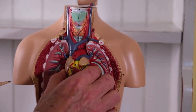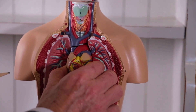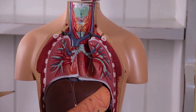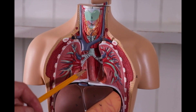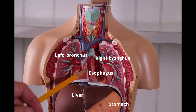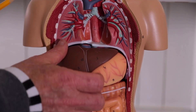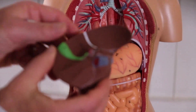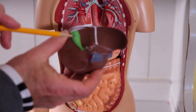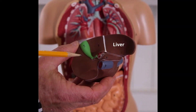Now I'll remove the heart and you can see some organs and items underneath. Here's the liver, which I will remove. And right behind the liver here are a couple things that I will label.